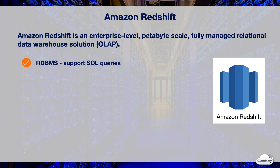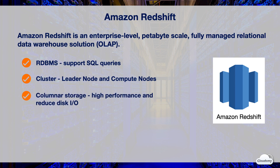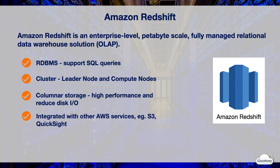Redshift is an RDBMS that supports standard SQL queries, built from PostgreSQL but designed for OLAP applications. The core infrastructure component is a cluster, composed of a leader node and one or more compute nodes. Redshift uses columnar storage, where each data block stores values of a single column for multiple rows, drastically reducing disk I/O requirements and the amount of data loaded from disk. Redshift is integrated with many AWS services — such as Amazon S3 for Data Lake and Amazon QuickSight for Business Intelligence. You can use Redshift Spectrum to directly query massive data stored in S3, and connect QuickSight to Redshift to quickly build business insights.